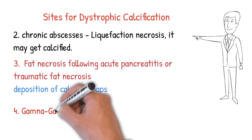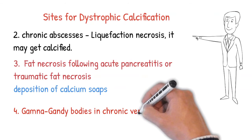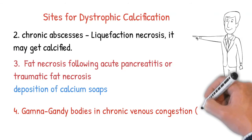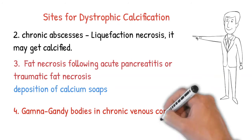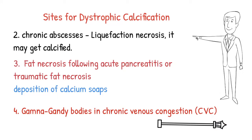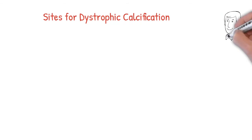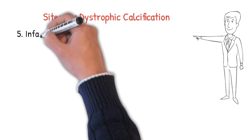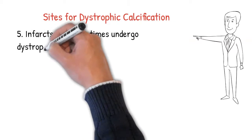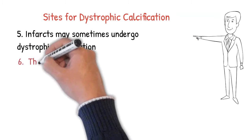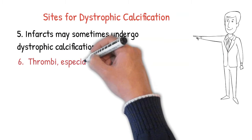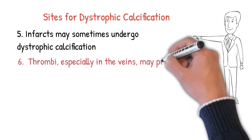Fourth example: in chronic venous congestion, venous blood is not moving forward and is stagnant, and calcium salts are deposited there. Calcium deposits also occur in infarcts — for example, in an infarcted kidney calcification can occur.